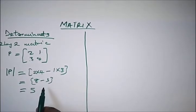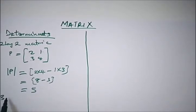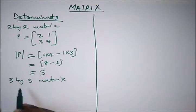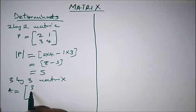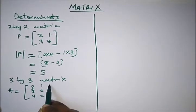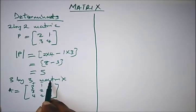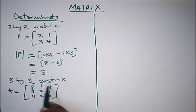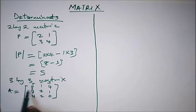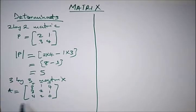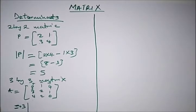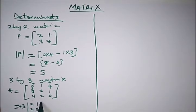To get the determinant of a 3 by 3 matrix, let's say we have A as [3, 3, 4; 1, 2, 2; 4, 1, 0]. We are going to use the minor of each element in the first row. The minor of 3 — canceling this row and this column — gives us [2, 2; 1, 0]. So we have 3 times the determinant of [2, 2; 1, 0]. The essence is to break this down to a 2 by 2 matrix so we can solve for determinants.